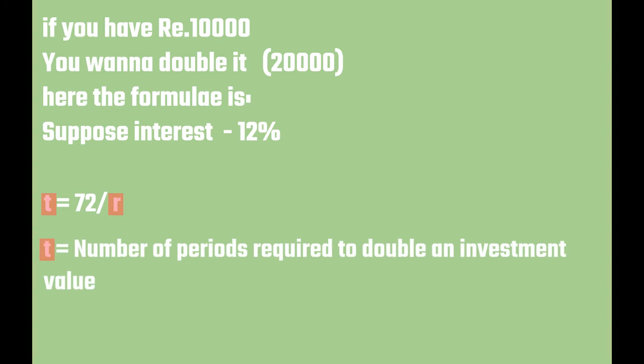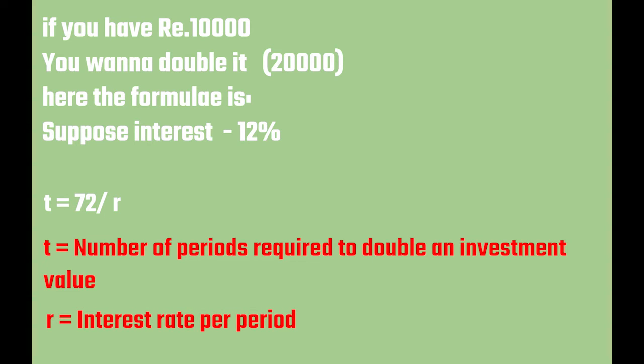Where T is the number of period it will take for the investment to double. Where R is the interest rate or the rate of return per period expressed as a percentage.